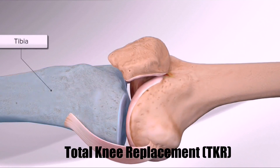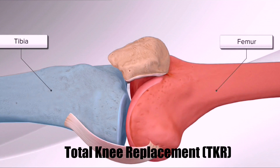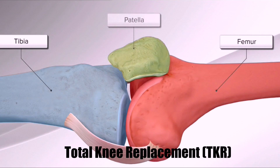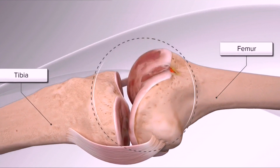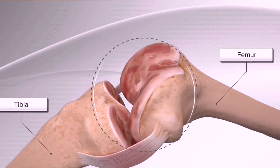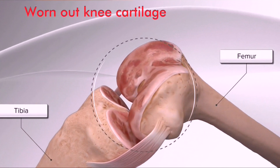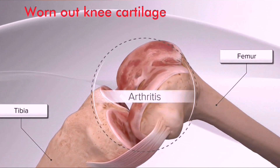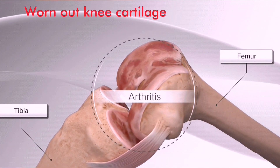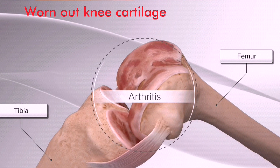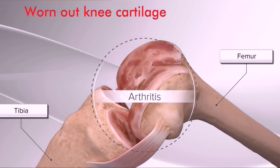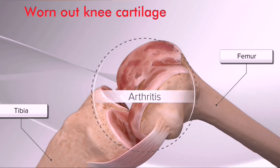The knee consists of the tibia or shin bone, femur or thigh bone, and patella or kneecap. In knee arthritis, the cartilage on the end of the bones slowly wears away, causing pain and irritation, making daily activities difficult. Arthritis can affect all or just one area of the knee.